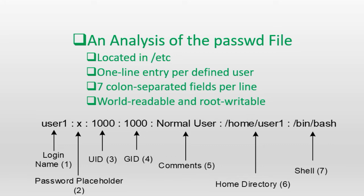Field number five is used to store general comments about the user, and it may include the user's full name, contact information, location, and job role to help identify the person this user account belongs to. For user accounts created for an application or program, this field may include the application name and other relevant information. The information stored in this field is referred to as the user's finger information, as it can be read by a Linux program called finger. This field is optional and may be left empty.